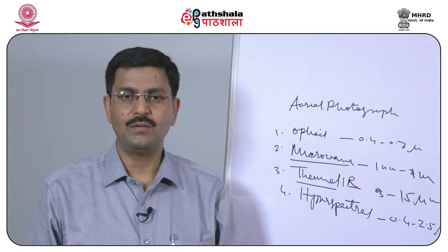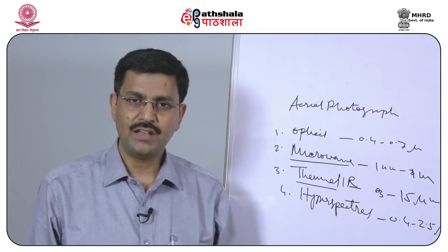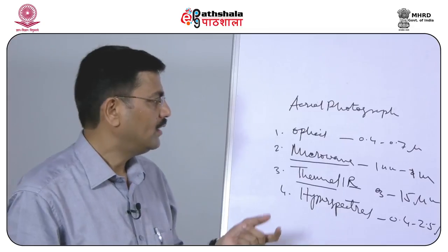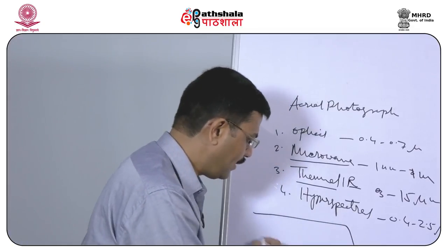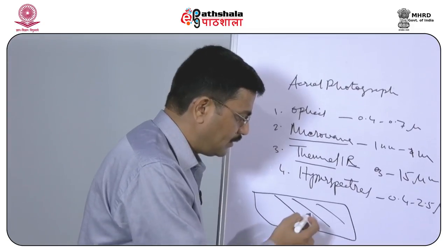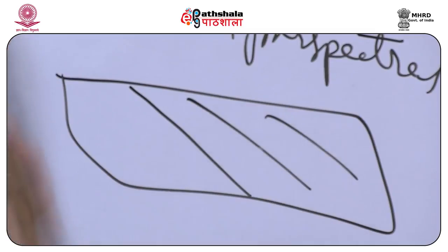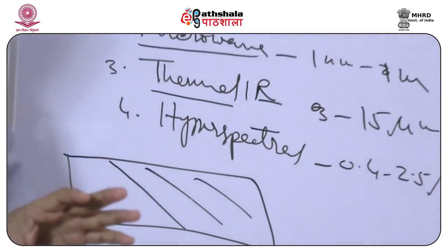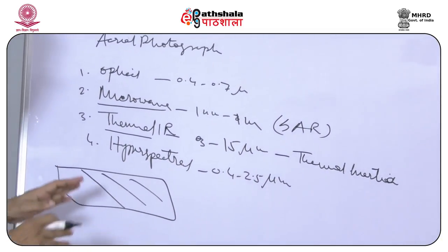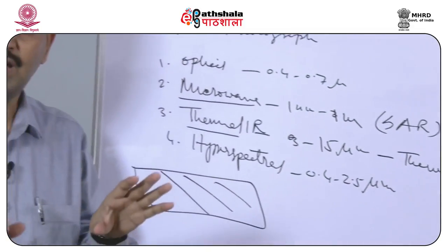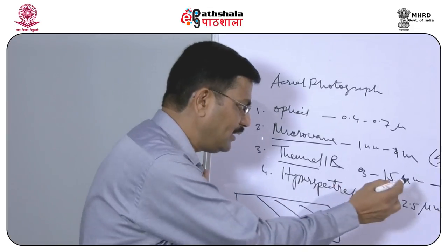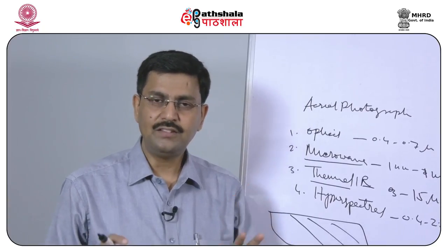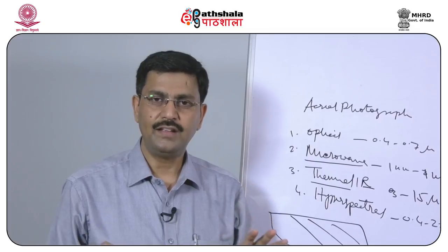Tone is one of the important parameters in visual interpretation. On a weak zone, you will find a darker tone. Therefore, by using thermal satellite data, we can identify land surface features such as weak zones, fault lines, and other structures — and detect areas where the chances of earthquake, folding, and faulting will be more.